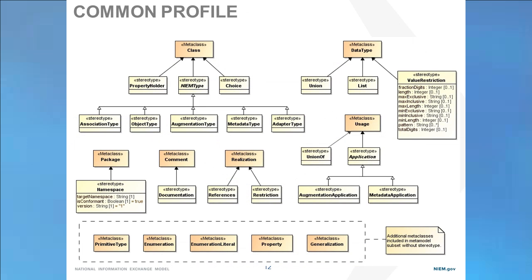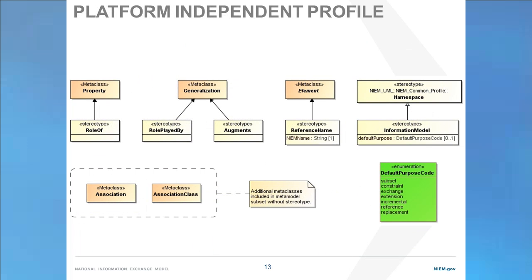This is a graphical representation of the common profile, showing all the concepts needed at that level. The boxes marked as MetaClass are existing UML concepts such as class, data type, package, realization, enumeration, and generalization. Where necessary, Niem-specific concepts extend these existing UML concepts, such as object types, metadata, namespaces, and unions. For more detail, please see the Modeling Guides section of the NiemUML specification. The Platform Independent profile adds specific concepts to allow modeling at a more logical level, including UML associations and association classes, the concept of roles, a higher-level way to represent Niem augmentations, and the concept of an information model for a specific purpose.